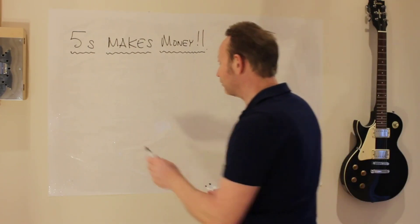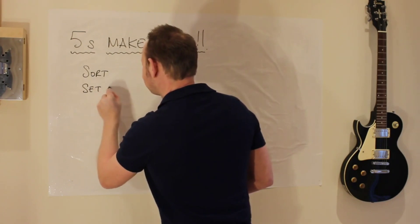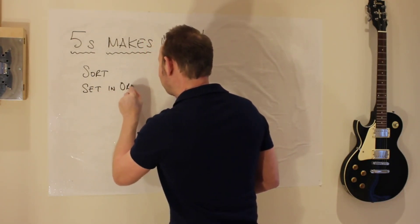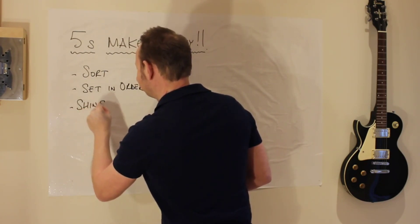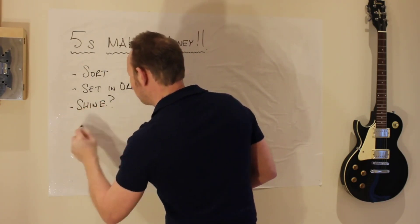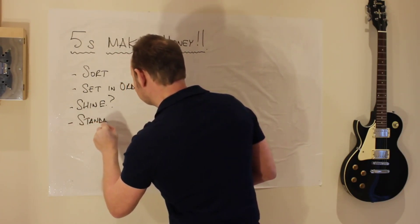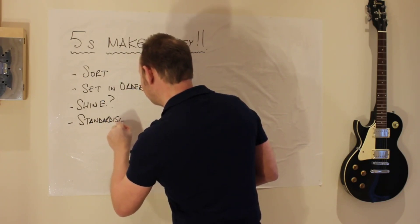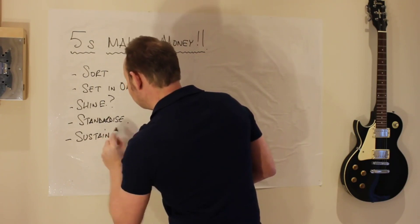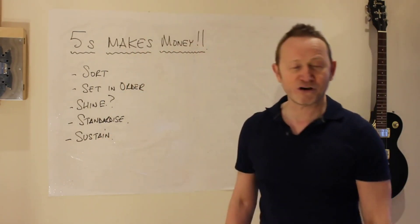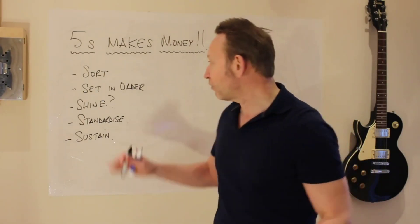So the first thing I want to talk about is the 5S steps themselves. What have we got? Sort, Set in Order, Shine — I'll come back to that one — Standardize, Sustain. These are the five steps; really this is simply a process.